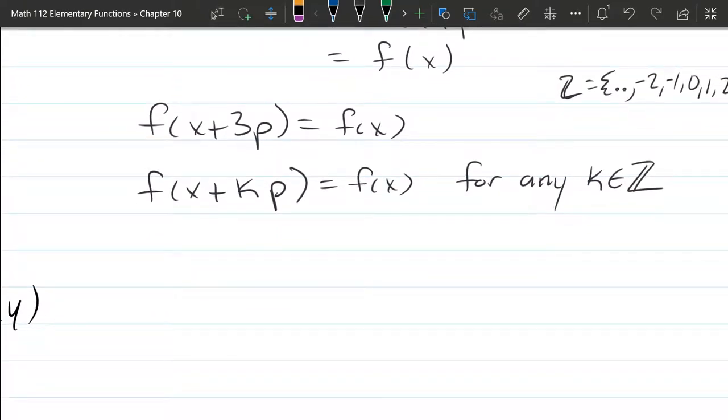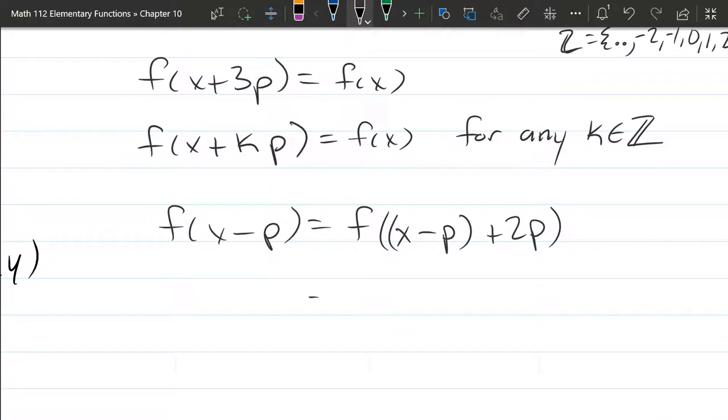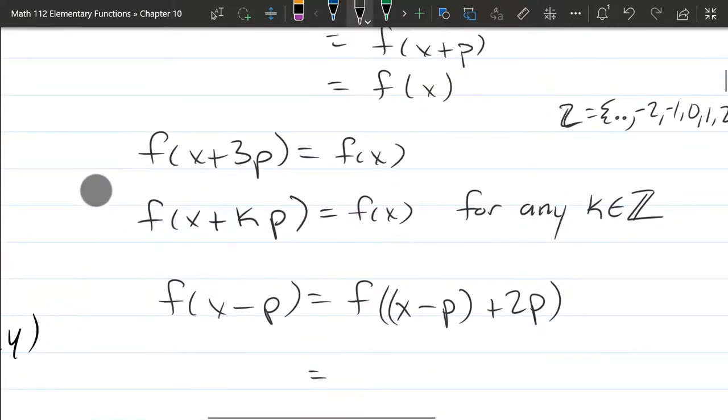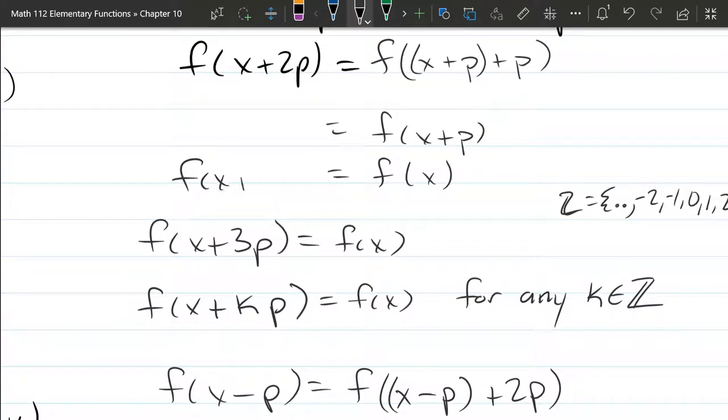And if you're wondering how it looks for negative K values, I'll just do the single X minus P. Now, we can only use a property when it's X plus P. So what I'm going to do is, let's go ahead and add. We're allowed to add as many P's as we want right here. So let's add 2P.